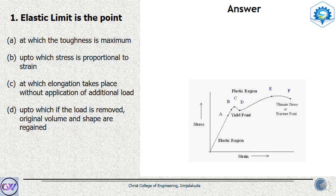From the diagram, point A is the elastic limit, point B is the proportional limit, points C and D are the yield points, point E is the ultimate point, and point F is the fracture point. So we can understand that the point corresponding to elastic limit is the point up to which if the load is removed, original volume and shape are regained. So option D is the correct answer.